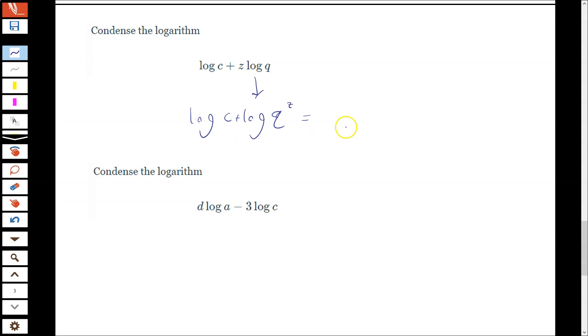Then I combine them. So they're being added together, so they are multiplied together inside the logarithm, and that's it. So log of C Q to the Z.